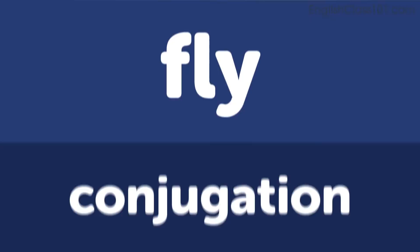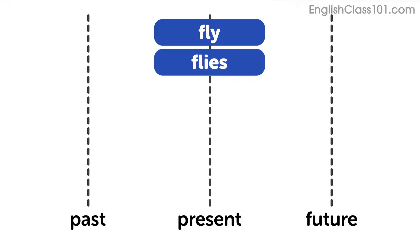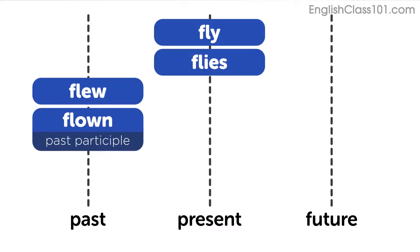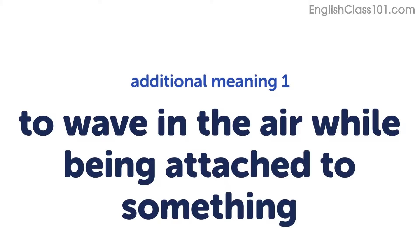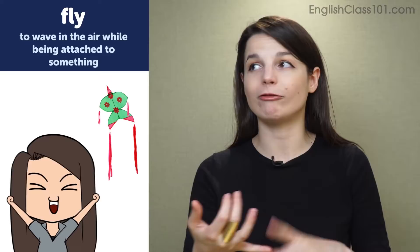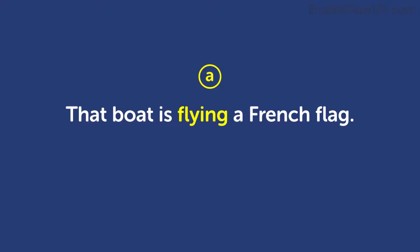Now let's look at the conjugations for this verb. So now let's talk about some additional meanings for this verb. The first additional meaning is to wave in the air while being attached to something else. So this is like flags. Example sentences: That boat is flying a French flag. Let's fly kites this afternoon.